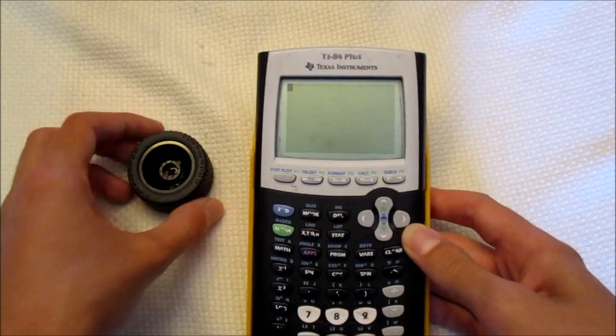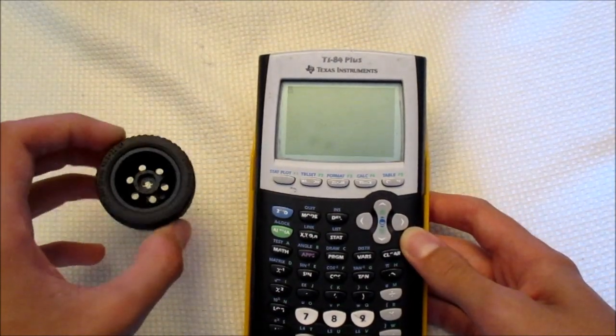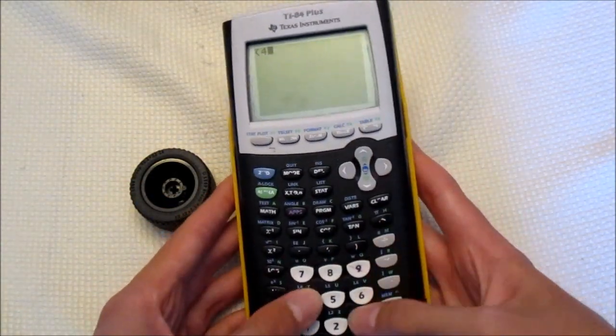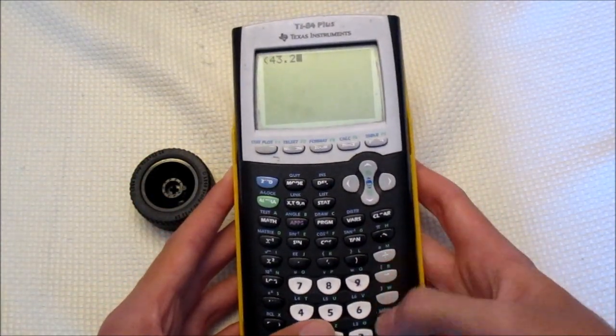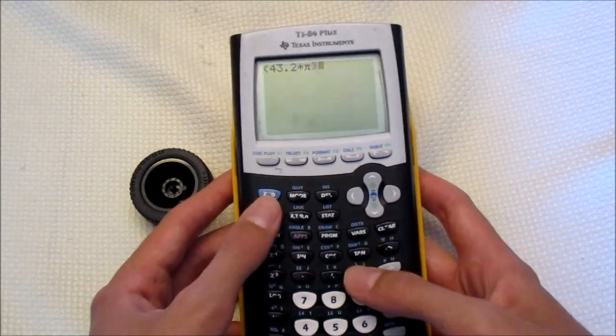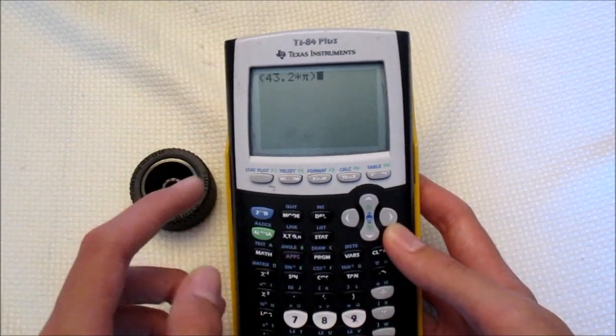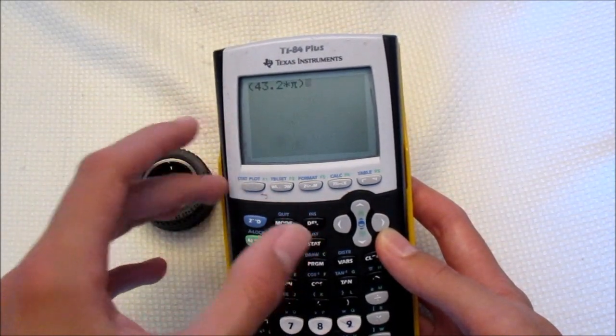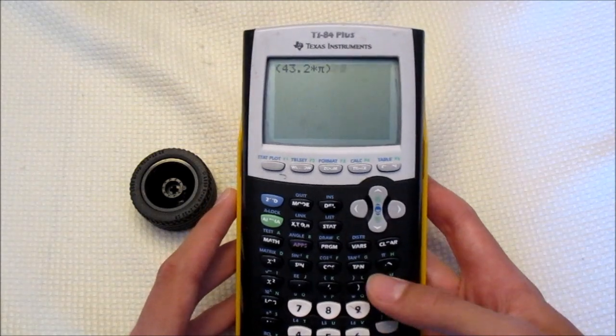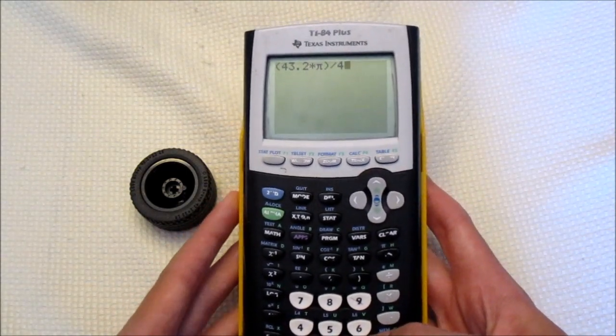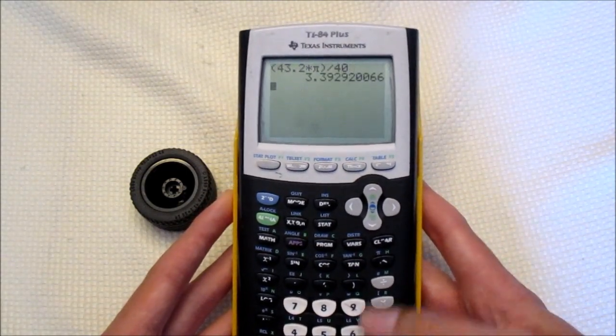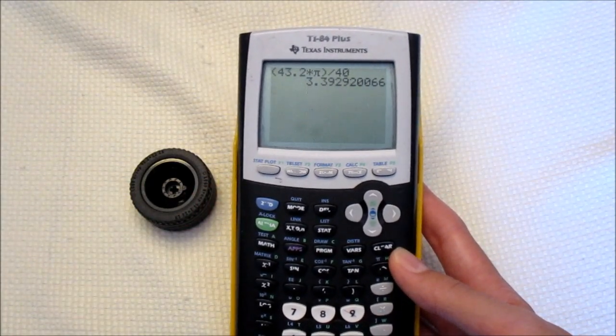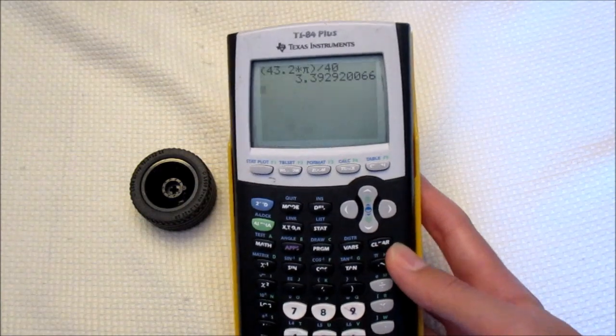So first up, we're going to calculate the slop distance for these really small wheels. They have a diameter of 43.2 millimeters, and we're going to multiply that by pi. Now it's important that you put this first part in parentheses here, because we want the calculator to execute this first and get an answer, and then divide it by 40. So now we're going to hit divide by 40, and then when you hit enter, you should get a number like this. And now we have 3.4 millimeters as the slop distance for these small wheels.